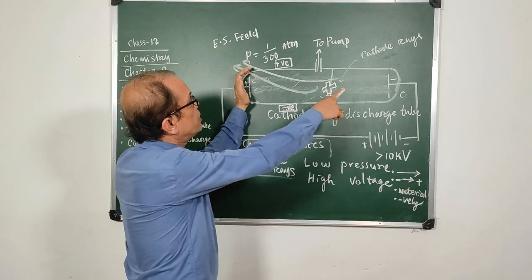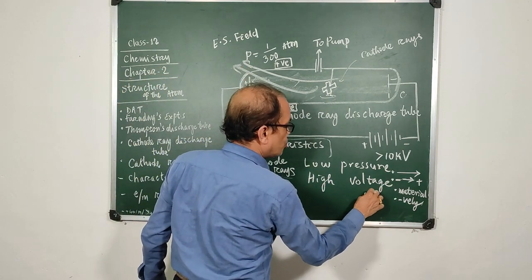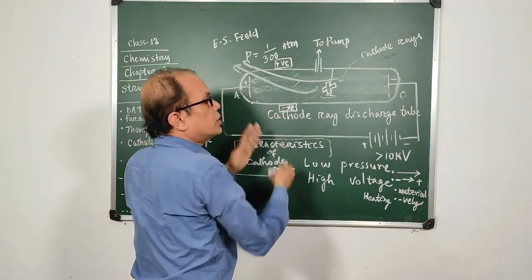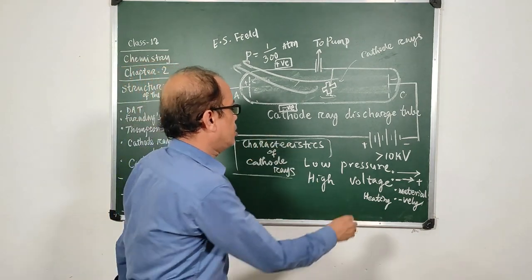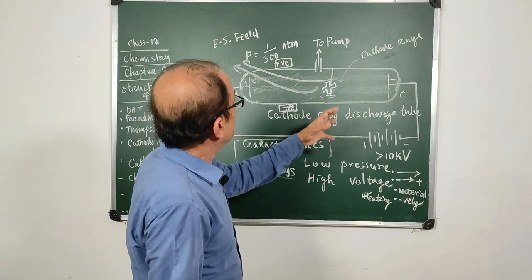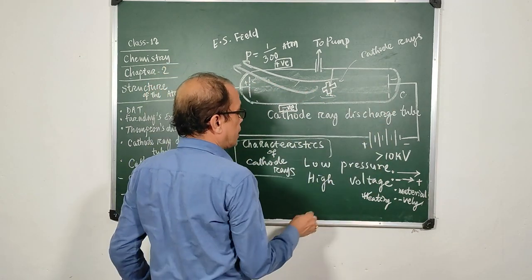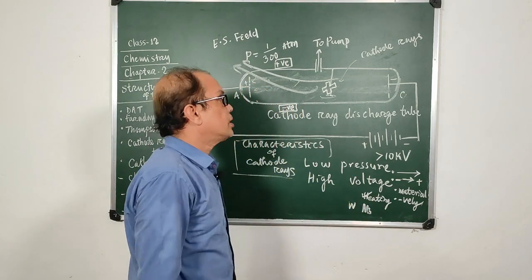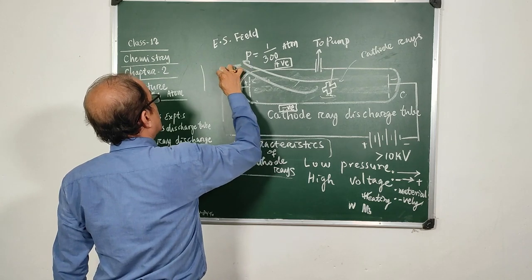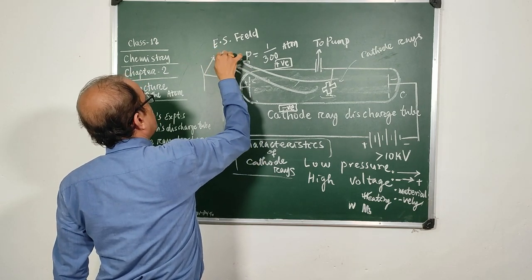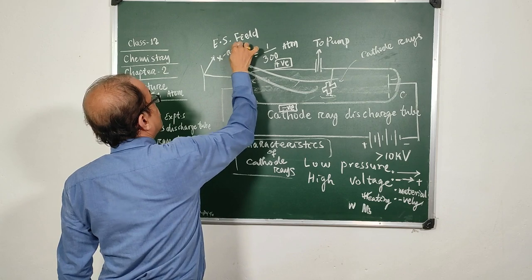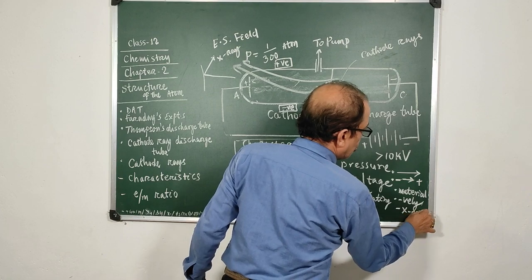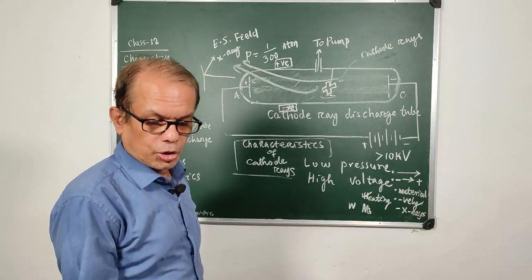The fifth characteristic was that when he placed metals in the path of the cathode rays, there was a heating effect — the metals were heated. So when cathode rays fall on metallic plates, they heat them. Additionally, when he allowed the rays to strike metals like tungsten or molybdenum, he found that a new ray was coming out — this new ray was found to be an X-ray. So cathode rays have the capability of producing X-rays when they fall on certain metals like tungsten or molybdenum.